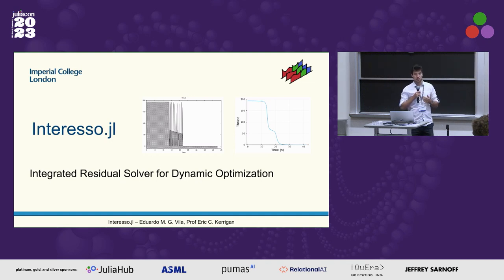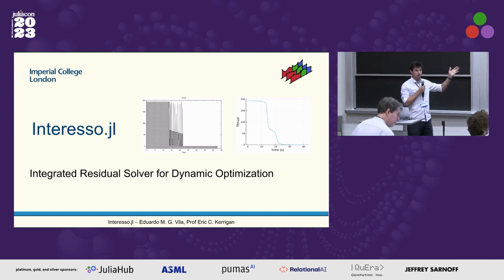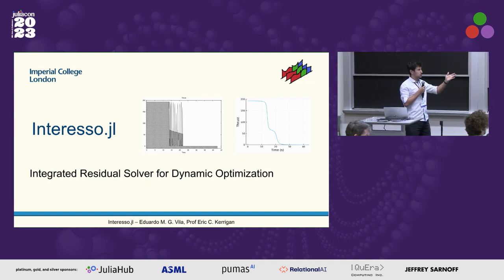it actually fails for a segment of the trajectory and this is a property of this problem and many others. Whereas if you use an Integrated Residual method, it doesn't fail and it gives you something that more closely resembles the analytical solution.